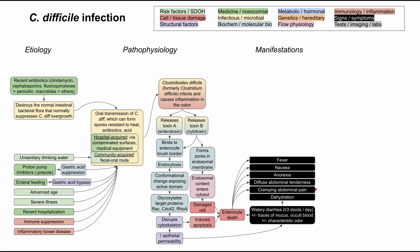Enterocyte death can also cause many other symptoms. Patients can have abdominal pain — either a diffuse tenderness across the abdomen or intermittent cramping pain associated with peristalsis of the gut. With diarrhea, dehydration, and pain, patients can have anorexia, fever, and nausea as well. These are the typical symptoms of C. diff, and in many cases it'll be limited to just this. These symptoms typically occur 2 to 10 days after initiation of antibiotics, which was our most prominent etiology.